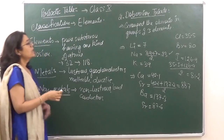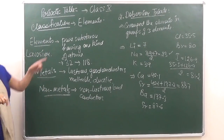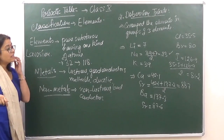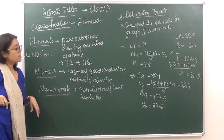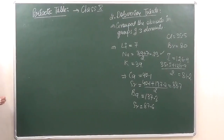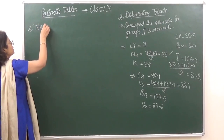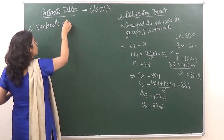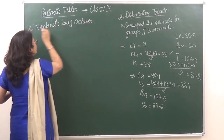But as many more elements were discovered, they failed to show the property described by Dobereiner's Triads. So the need arose to give another arrangement of elements. This arrangement was initiated by the next scientist, whose name was Newlands. The third classification was given by Newlands, and his law is known as Newlands' Law of Octaves.